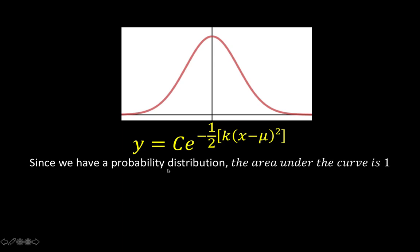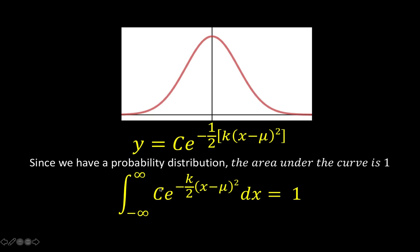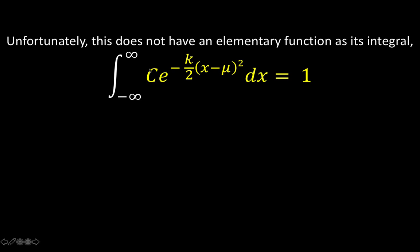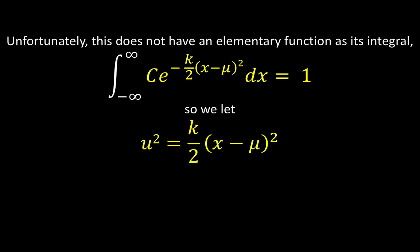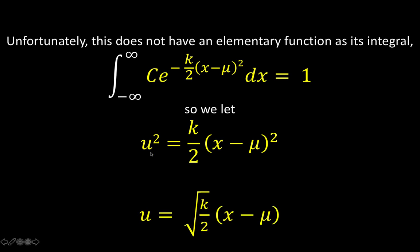Since we want a probability distribution, the area under the curve must be forced to equal 1, because probability is between 0 and 1. In order to force the area under the normal curve to equal 1, we need to find the appropriate constant. Unfortunately, this integral does not have an elementary function as its antiderivative. But we can apply a trick: we find the definite integral of the equation of our normal curve from negative infinity to positive infinity and set that equal to 1. We perform what we call a u-substitution, letting u squared equal the exponent k over 2 times the quantity x minus mu squared, not including the negative sign, because we want to take the square root of both sides to find u.